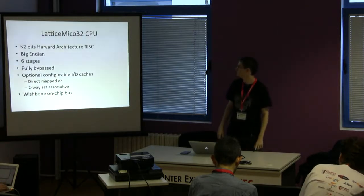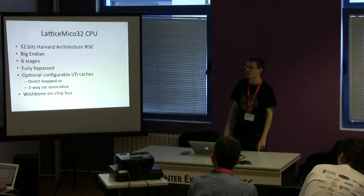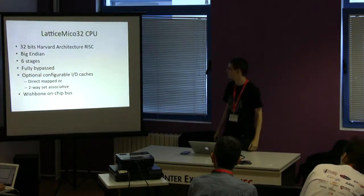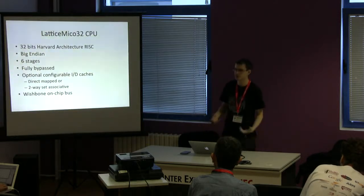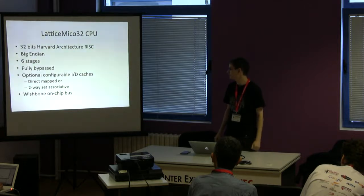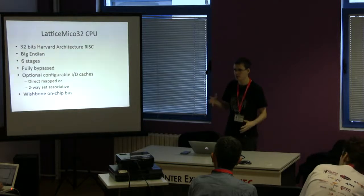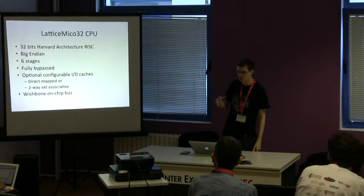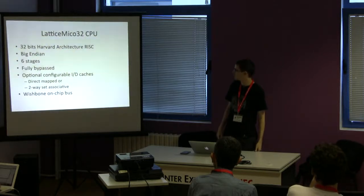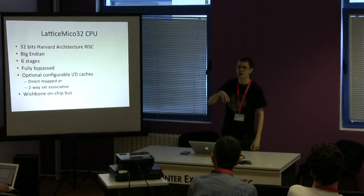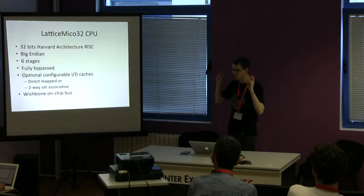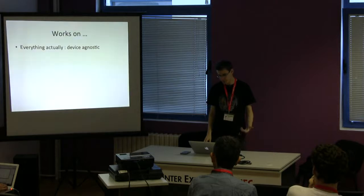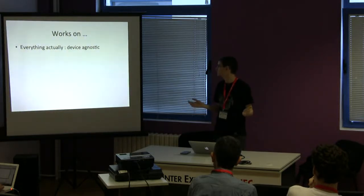Mico32 is a 32-bit RISC architecture, big-endian, with a six-stage fully bypassed pipeline — pretty good in terms of performance. You can add caches or disable them; they are up to two-way set-associative. It uses the Wishbone on-chip bus, an open-source specification used by the entire open cores community, so you can easily find a lot of open-source cores using this protocol. This CPU works on pretty much every FPGA because it's device-agnostic and doesn't use vendor-specific blocks.